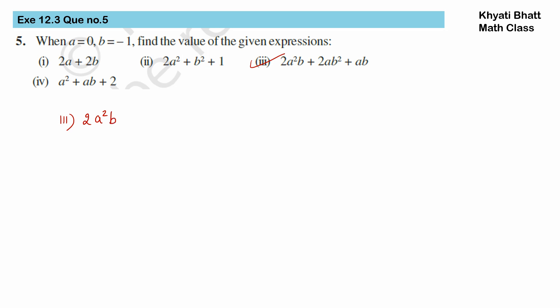Third expression: 2a²b plus 2ab² plus ab. By inserting values of a and b, we will get the answer. Now, we have to be very careful as the squares of a and b are changing.